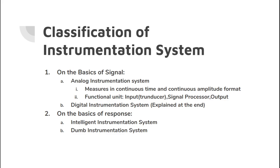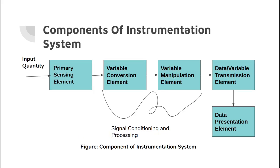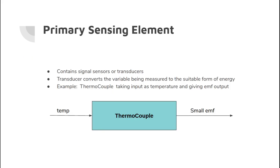Next we will learn about the functional units of the instrumentation system. The functional units of the instrumentation system contain the primary sensing element or input system, the variable conversion element, and the variable manipulation element — which combined are also called signal conditioning and processing.